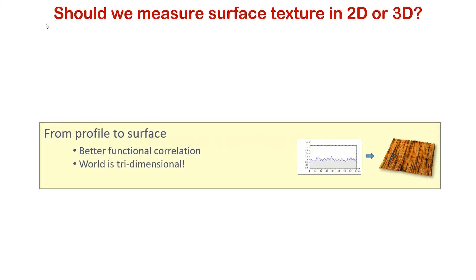Firstly, surface texture measuring instruments evolved from profiles to surfaces. Nature is three-dimensional and some functions can be analyzed more reliably using surface parameters. It is said that one gets better functional correlations.